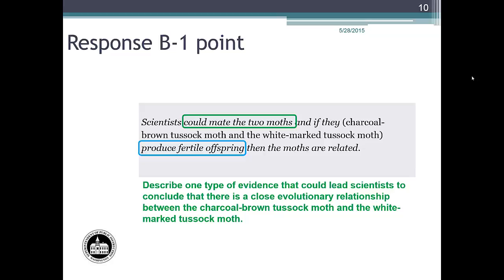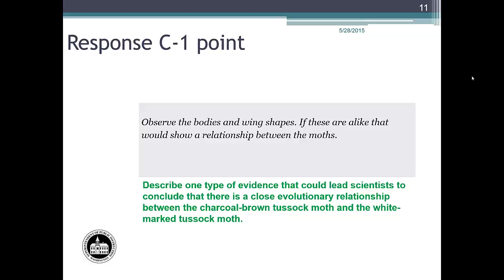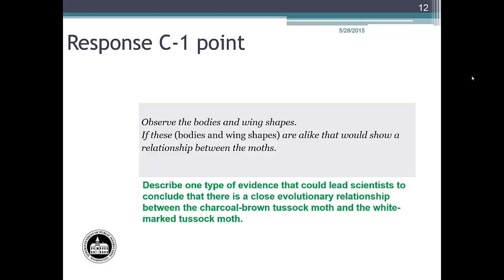Next, we will look at student response C. Response C reads: Observe the bodies and wing shapes. If these are alike, that would show a relationship between the moths. We are looking for two parts: the method — bodies and wing shapes — circled in green, and the description of the evidence — these bodies and wing shapes are alike — circled in blue. The combination fits within the parameters of the rubric. Response C is an example of a student response that would earn one point.